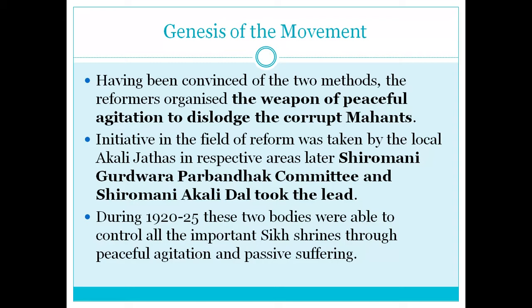Initiative in the field of reform was taken by local Akali Jathas, and later the Shiromani Gurdwara Prabandak Committee (SGPC) and Shiromani Akali Dal took the lead. This whole Gurdwara Reform Movement lasted from 1920 to 1925, and these two bodies were able to control all the important Sikh shrines through peaceful agitation and passive suffering, so much so that even the Indian National Congress was amazed at how the Sikhs were conducting themselves in Punjab.